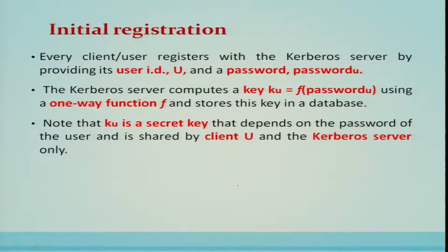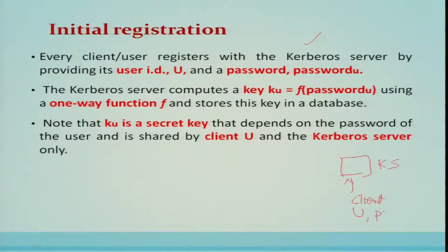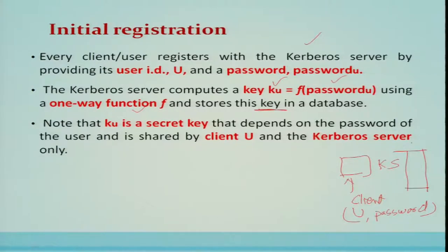There is a process called initial registration, where each client registers with the Kerberos server by providing its user ID and password. The Kerberos server computes a key for that client, called KU, by applying a one-way hash function on the password, and stores this key in a database of all registered clients.